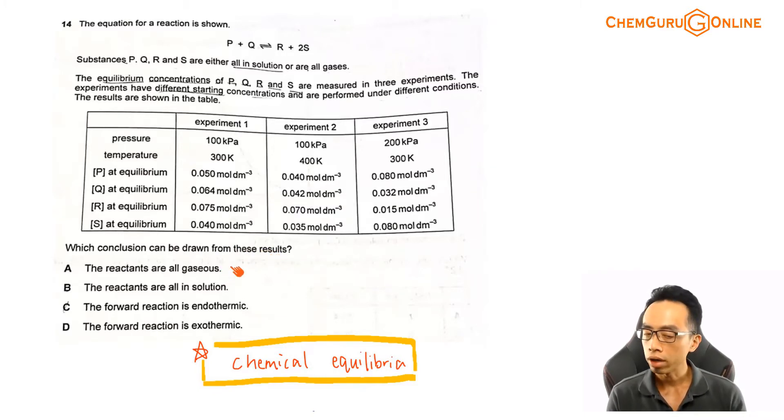The question is asking which conclusion can be drawn from these results. A, the reactants are all gases. B, the reactants are all in solution. C, the forward reaction is endothermic. D, the forward reaction is exothermic. So the topic tested in this question clearly is under chemical equilibrium.